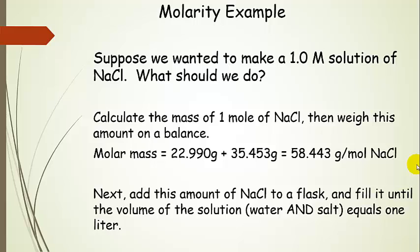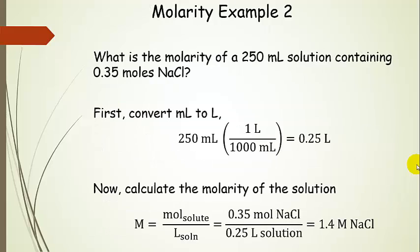Let's do a few calculations with different volumes and different molarities. For our second example, we're going to calculate molarity — that's capital M — and remember that's moles of solute over liters of solution. We have 250 milliliters of a solution containing 0.35 moles of sodium chloride. The first thing you need to do whenever you see milliliters is convert that to liters, because molarity is in liters. So converting 250 milliliters: divide by 1,000 and you get 0.25 liters.